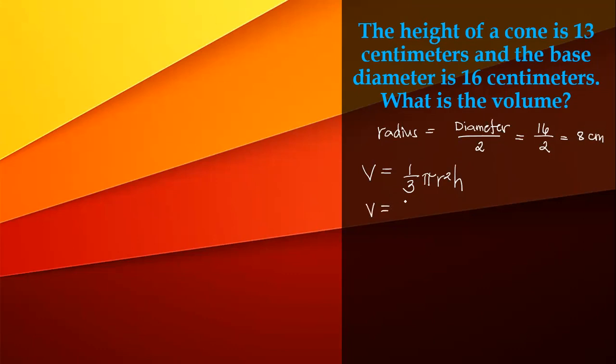Volume equals one-third times pi, which is 3.14 in decimal form, times the radius 8 squared times the height of a cone 13 centimeters.